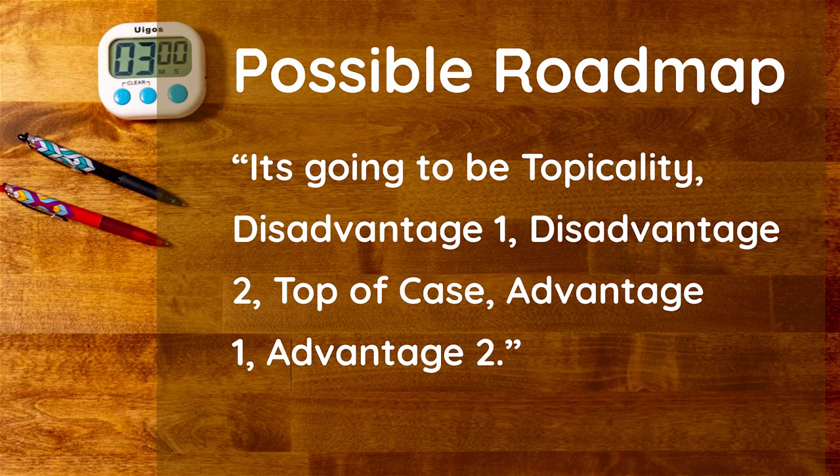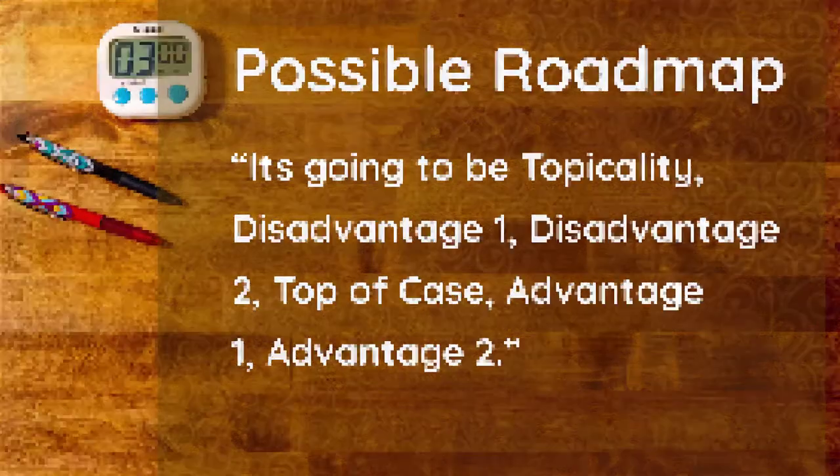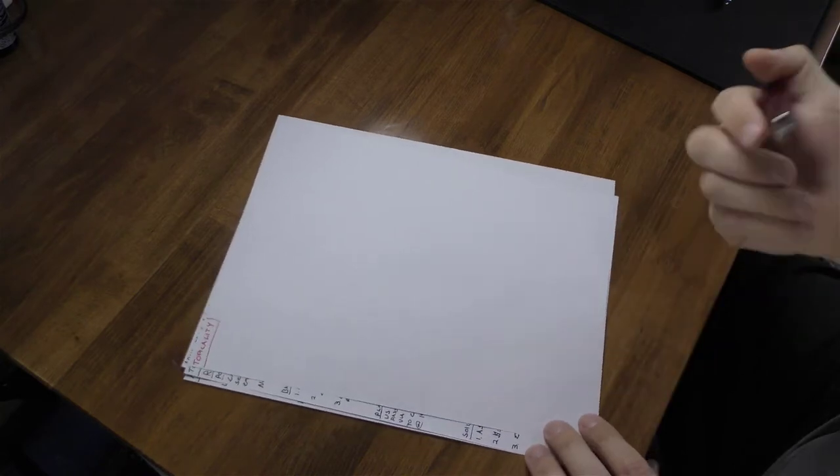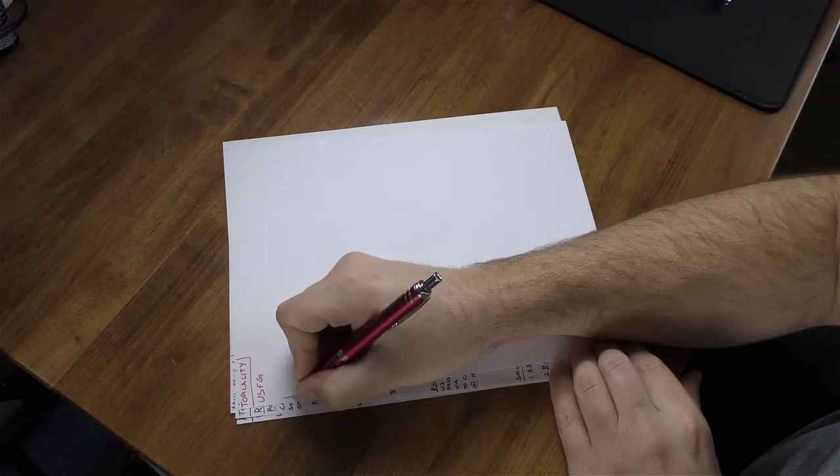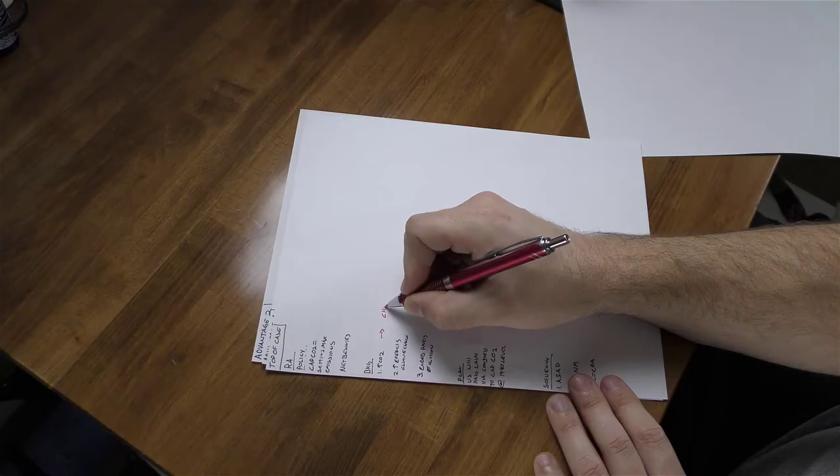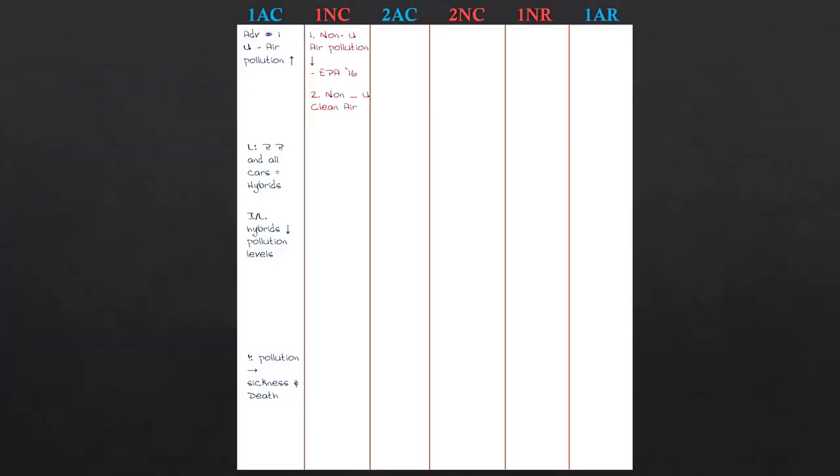You may also get opponents who are more upfront and say something like, it's going to be topicality, disadvantage one, disadvantage two, top of case, advantage one, and advantage two. The result is the same here. Three new off-case arguments, and then the case in order. Using a different color pen, flow the off-case arguments the same way you did the on-case arguments during the first speech. When they get to the on-case arguments and start responding directly to those arguments from the 1AC, line up their responses immediately next to the arguments that they answer. This is the part of flowing that makes it easy to visualize and respond to arguments in the debate.